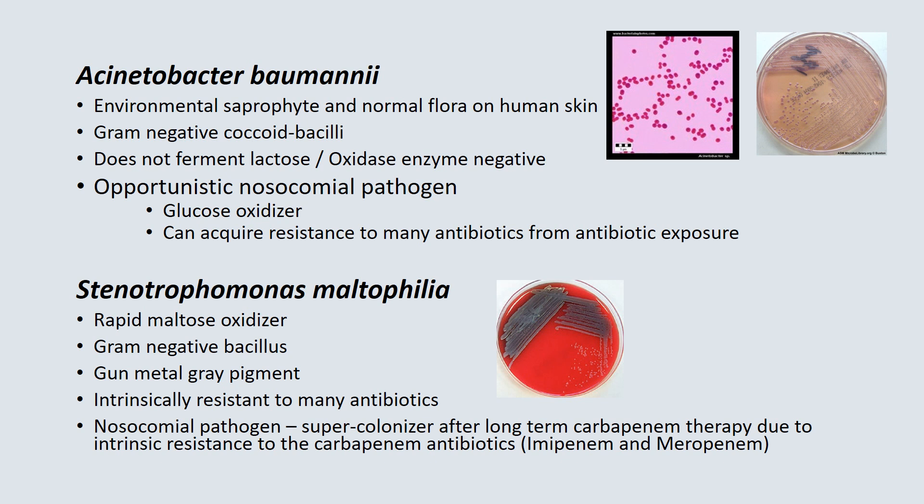Acinetobacter baumannii is an environmental organism also found on normal flora of the human skin. It is more of a gram-negative coccoid bacilli and could sometimes be confused with Neisseria on a gram stain. It does not ferment lactose and is oxidase enzyme negative. It is an opportunistic nosocomial pathogen that can adhere to endotracheal tubes and IV catheters, and over time can acquire resistance to many antibiotics from antibiotic exposure.